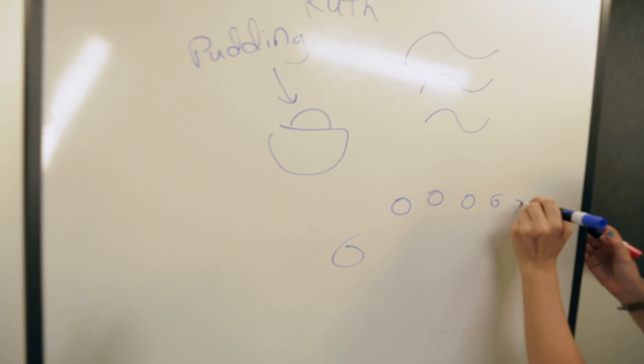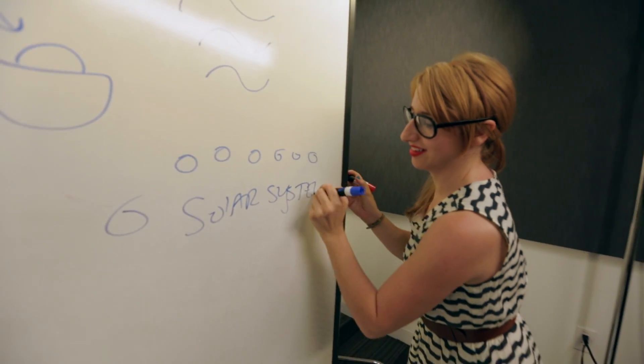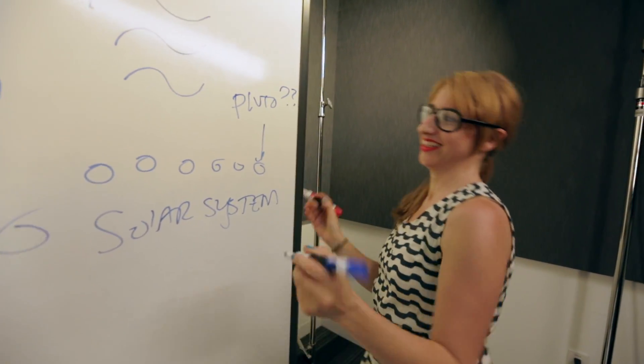He said, you can't always get what you want. That's meant to be our solar system. No, you can't always get what you want. Not a planet.